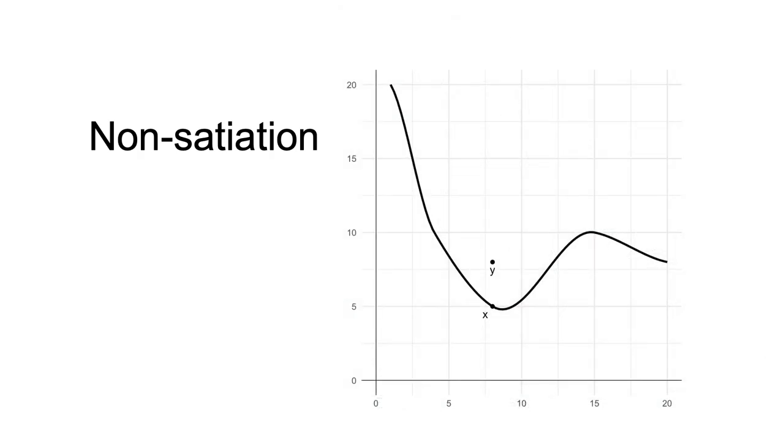In this diagram, I have plotted an indifference curve. Point X is on the curve. For non-satiation, there will always be a point such as Y that is strictly preferred to X.